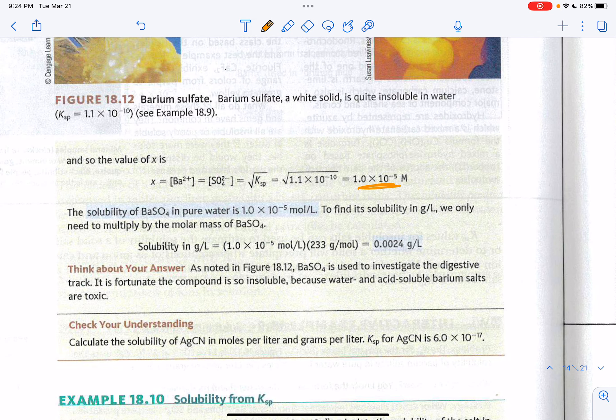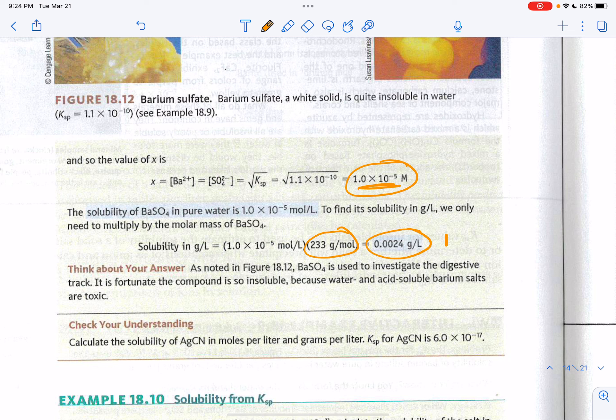Back to our problem. We want to wrap things up. Once you know what the molarity is, then you can multiply by the molar mass and convert it into grams per liter. You can see again that we are much less than 0.1 grams per 100 grams of water because this is 0.0024 grams per 1,000 grams of water.